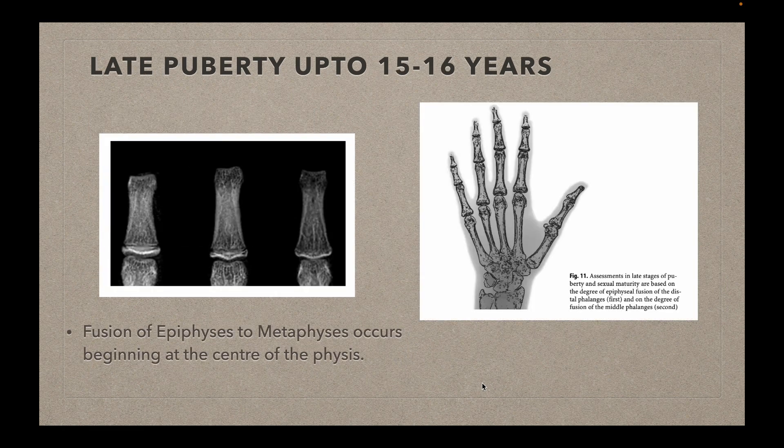The next stage is the late pubertal stage, up to 15 to 16 years. By this time, fusion of the epiphysis occurs, and the pattern of fusion starts in the center and progresses laterally on both sides.